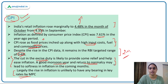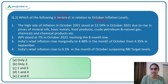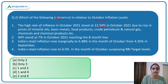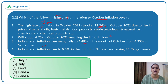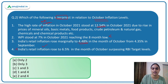Coming back to the question — we need to identify the incorrect statements. The first statement says high WPI inflation in October stood at 12.54% — this is correct. The second says WPI stood at 7% in October — this is incorrect. The third says India's retail inflation rose marginally to 4.48% in October — this is correct. The fourth says retail inflation rose to 6.5% surpassing RBI's target — this is also incorrect. So the second and fourth are incorrect; the answer is option E.